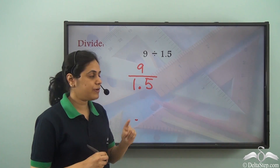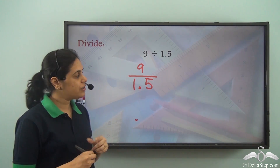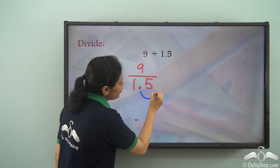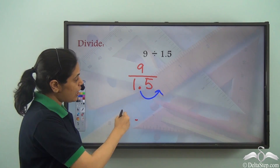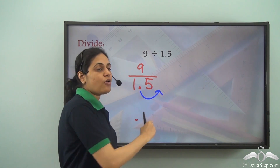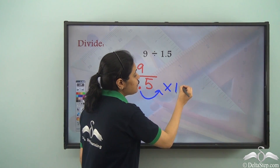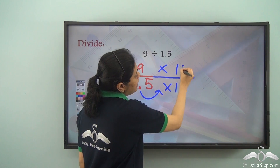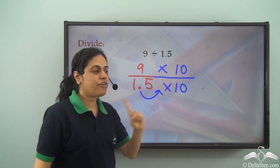When the divisor is a decimal number, the first thing we need to do is remove this decimal point. I need to bring the decimal point to the right — that is, remove the decimal point of the divisor. The decimal point shifts to the right when I multiply by a power of 10. I want it to shift one place to the right, so I multiply by 10. When I multiply the denominator by a number, I also need to multiply the numerator by the same number. So this becomes 9 into 10 divided by 1.5 into 10.